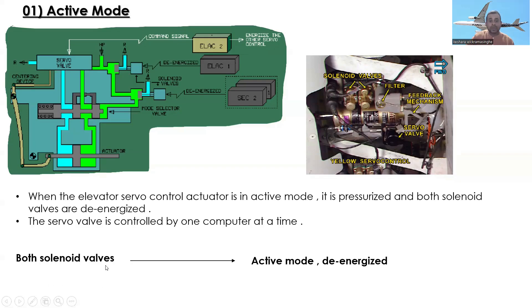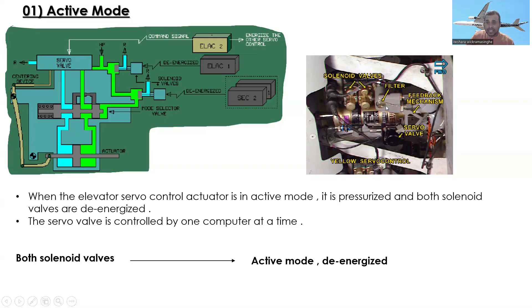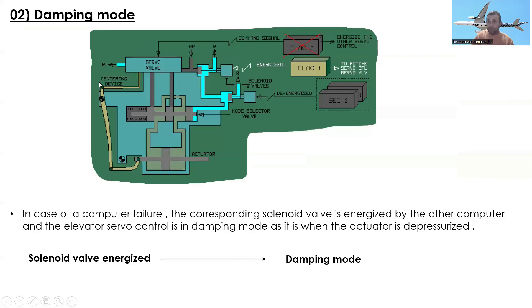To summarize active mode: both solenoid valves are de-energized and the servo control actuator is pressurized. Looking at the real picture of the elevator servo control, you can see the solenoid valves, the filter, the feedback mechanism, and the servo valve. There are four servo controls — two work from the blue hydraulic system, one from green, and one from yellow.